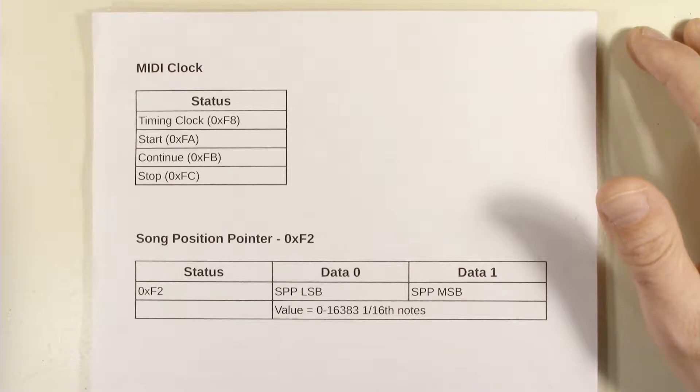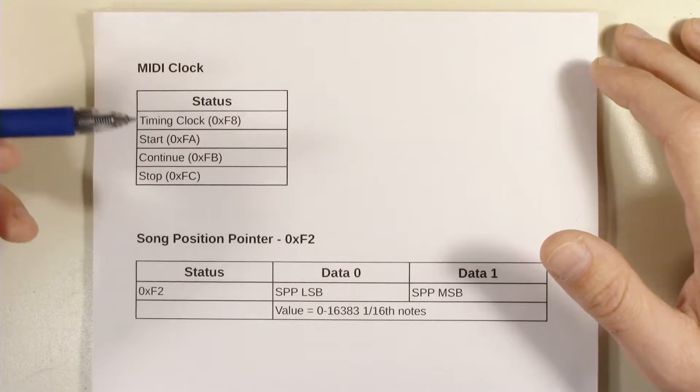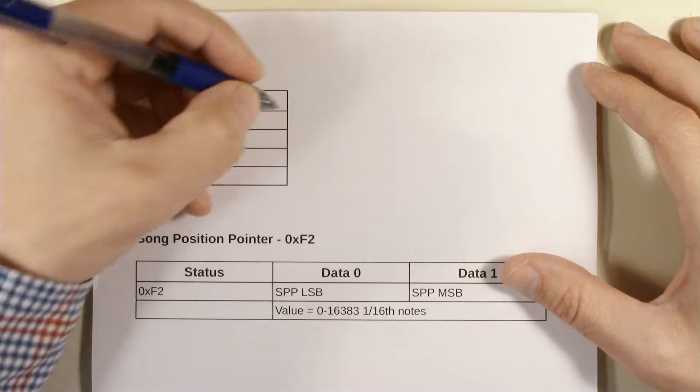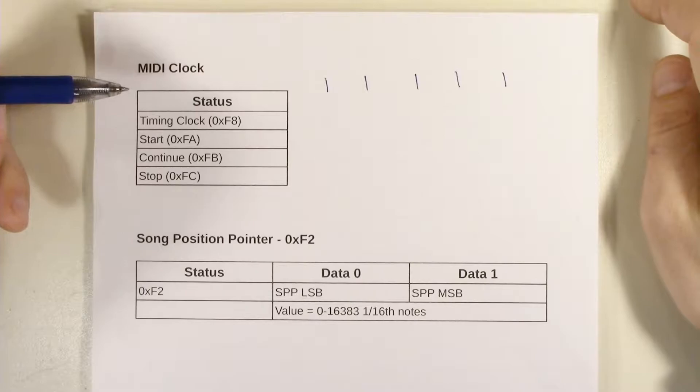So the timing clock, this is the thing that actually causes time to advance in the sequence. So the timing clock is F8. When it sends that message, there you go, you've got timing going along.